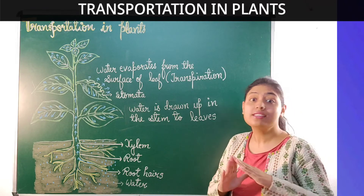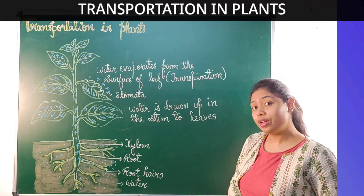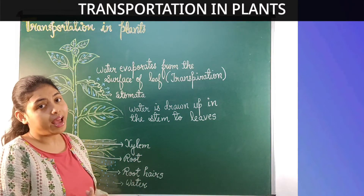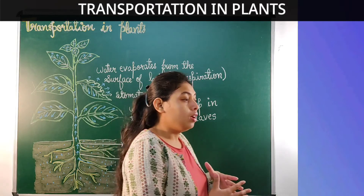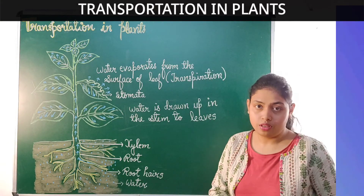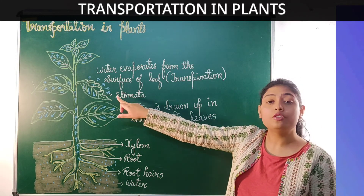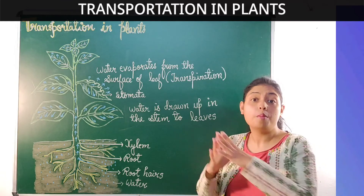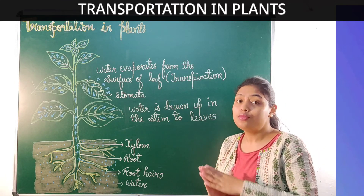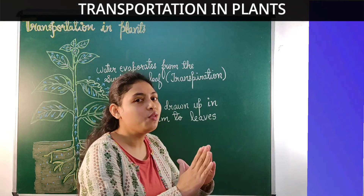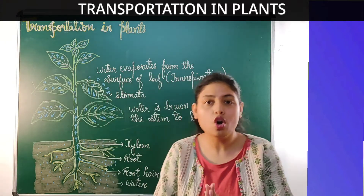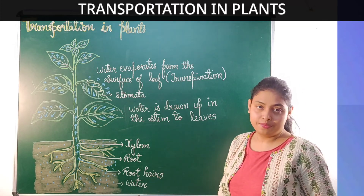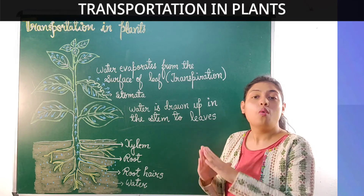Let us have a quick recap. Transpiration is the loss of water from the surface of the leaf in the form of vapors. The suction force created by transpiration causes leaves to pull water from branches, branches from stem, stem from roots, and roots absorb water from the soil through tiny hair-like structures called root hairs. This is how roots absorb water from the soil.